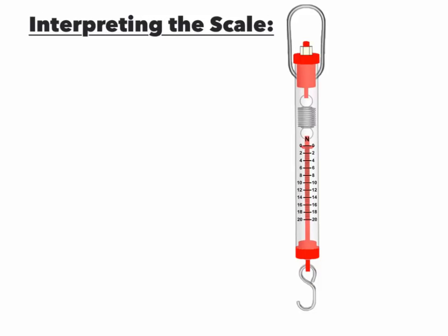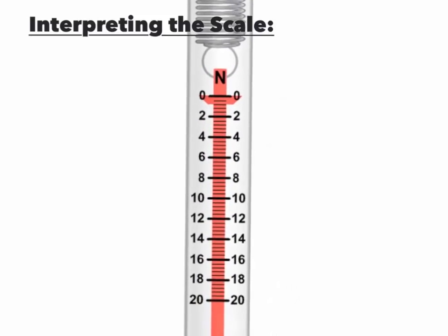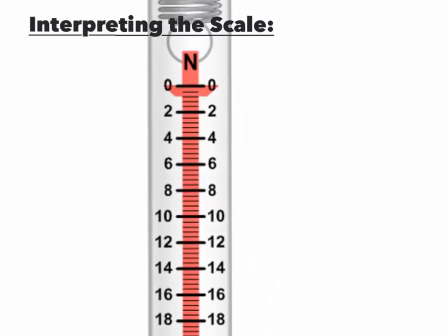To correctly interpret the scale, you need to know what the markings on the scale represent. The little markings are what we call graduations. In order to read the graduations, all you need to do is count the number of graduations between two marked locations. What I mean by this is that if you take and you start at one location, let's say we start at zero.